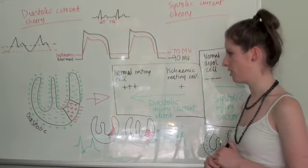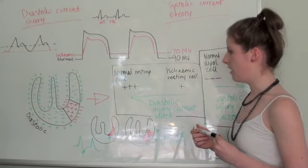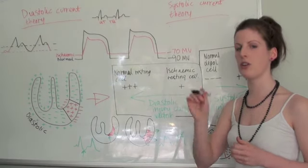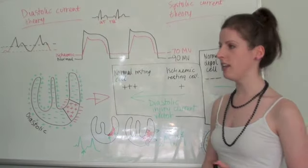So you'll recall from before that when a vector moves towards a positive electrode, you get a positive deflection on the ECG. That's when we come over here.